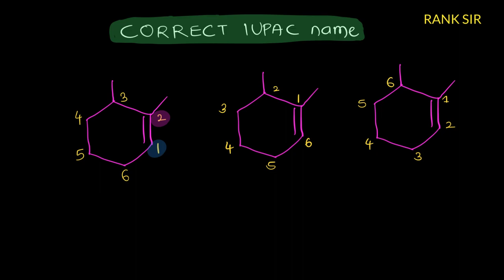Now here the double bond position is one — this is the double bond position — and also the substituent position. This is therefore preferable, but we'll check if it is exactly correct or not. This is anticlockwise: two, three, four, five, six.